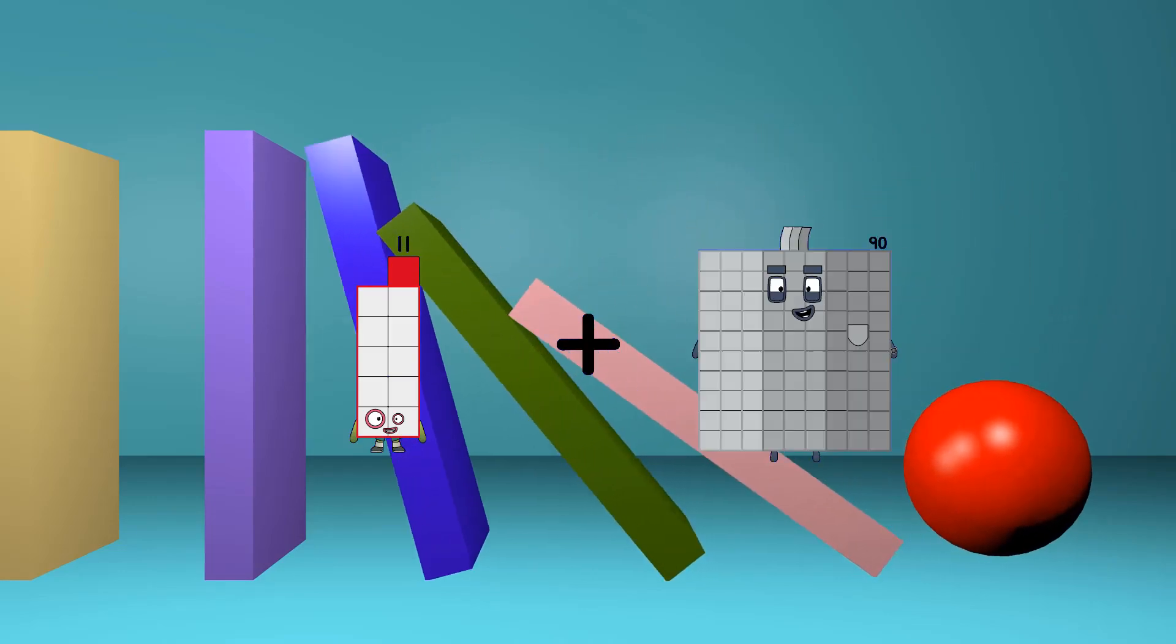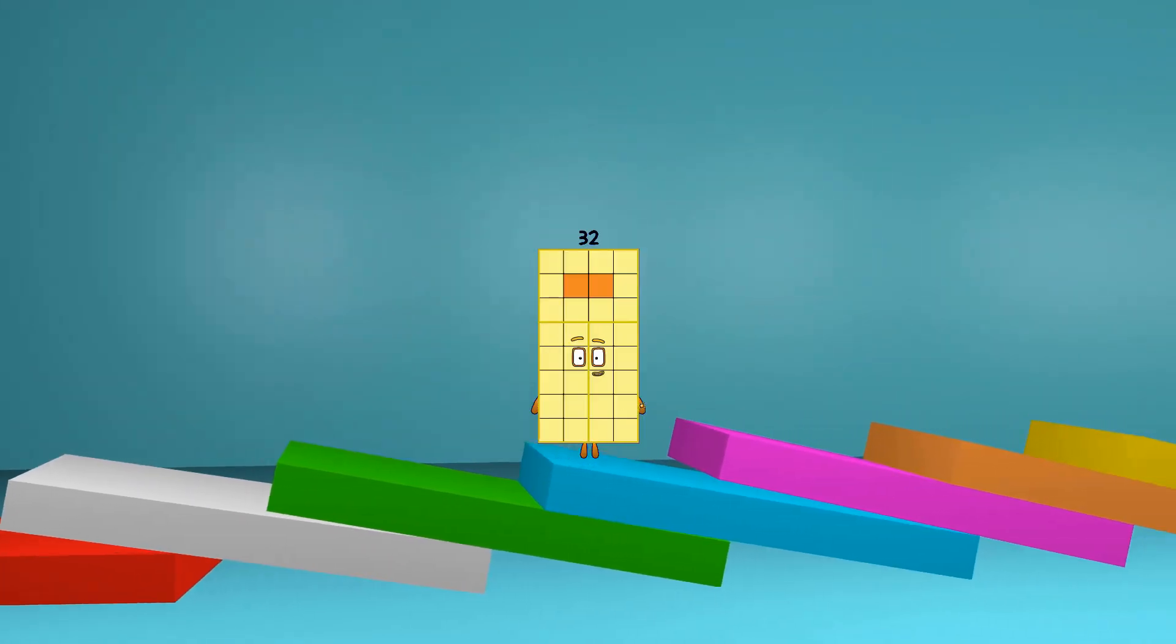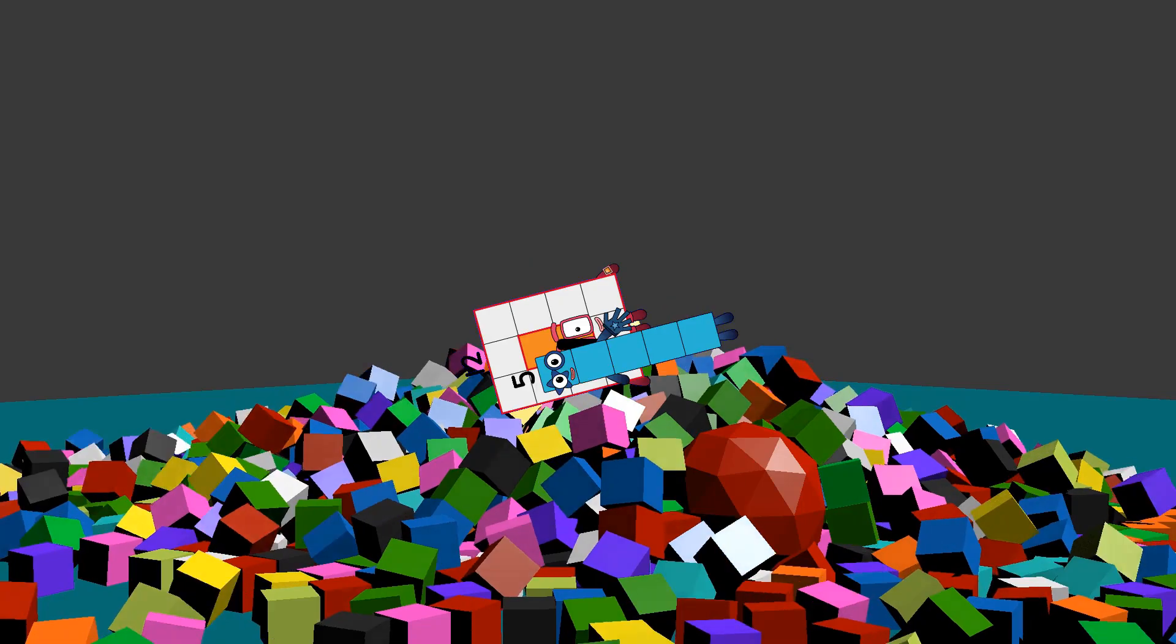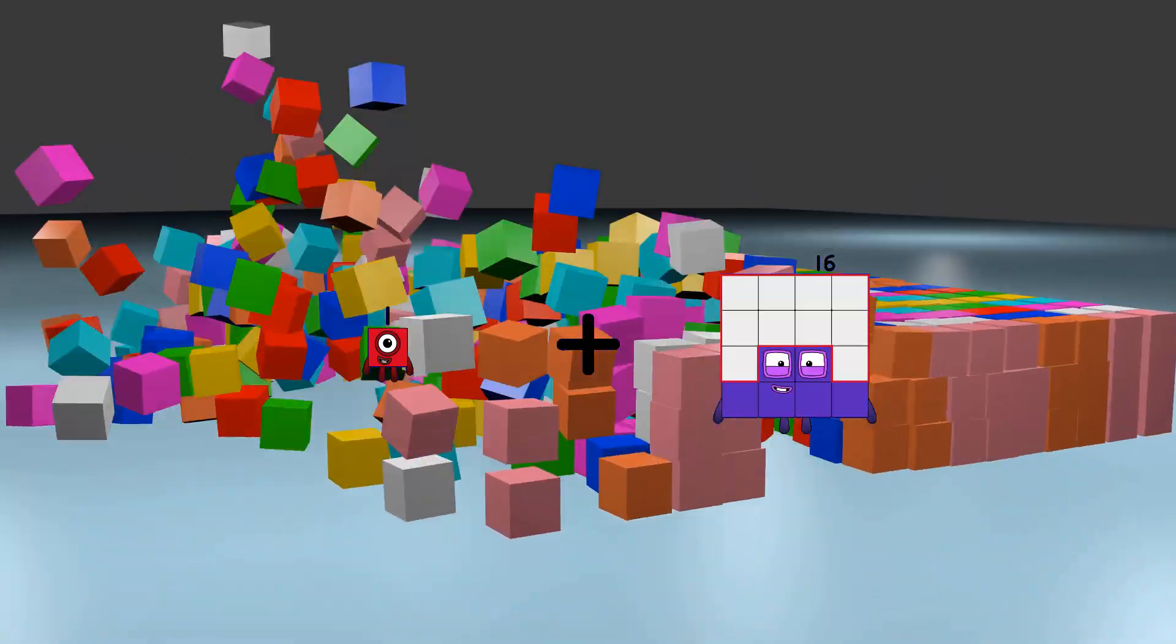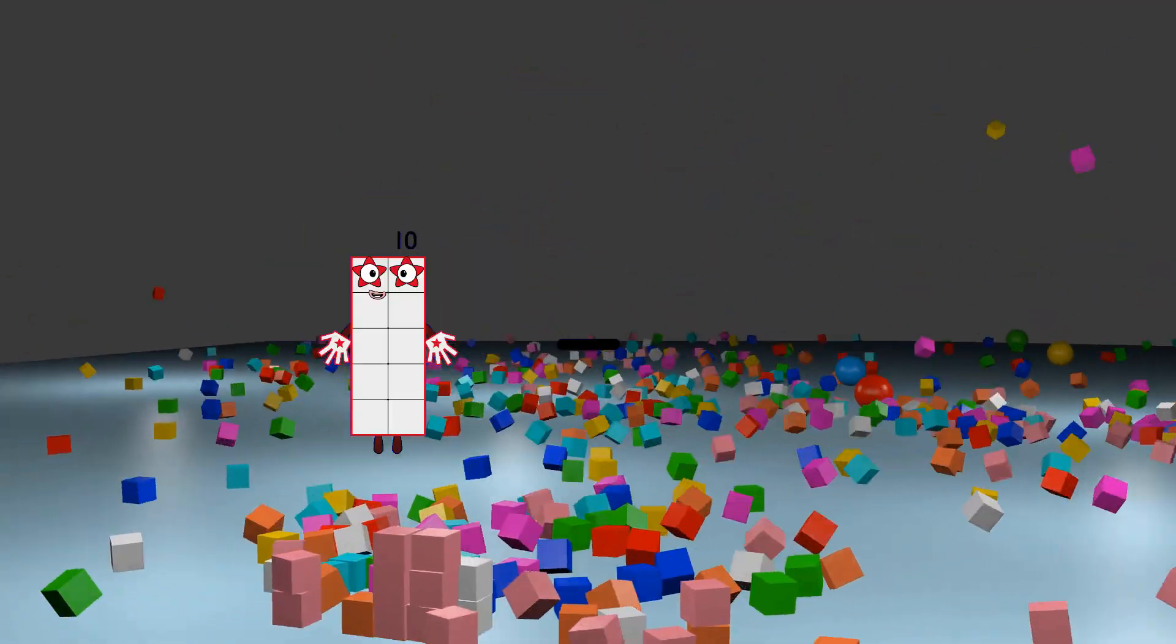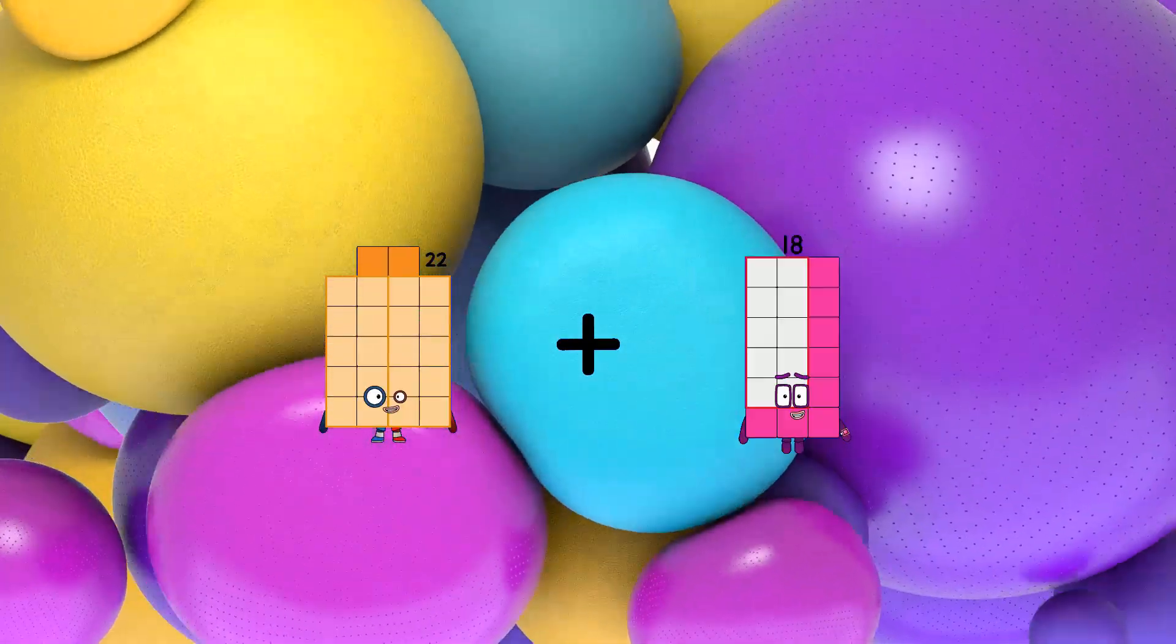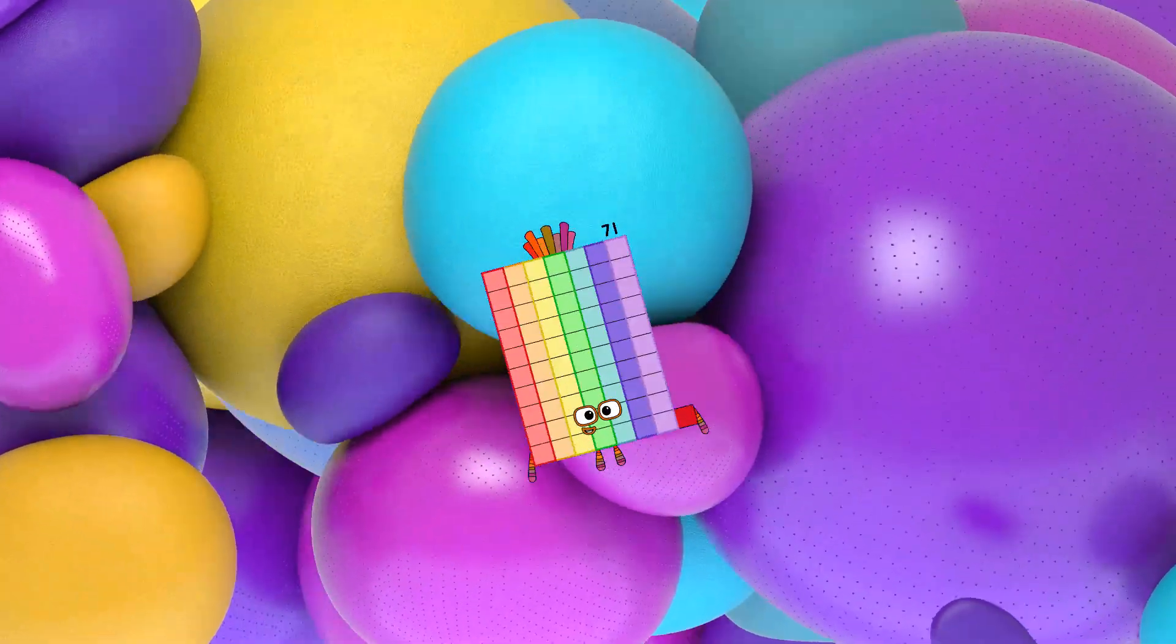11 plus 21 equals 32. 12 minus 5 equals 7. 1 plus 16 equals 17. 10 minus 3 equals 7. 22 plus 49 equals 71.